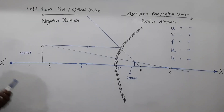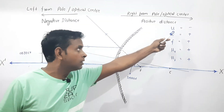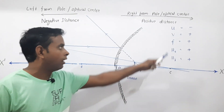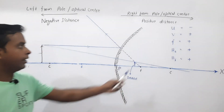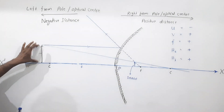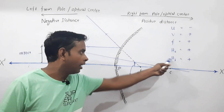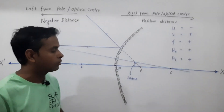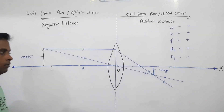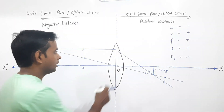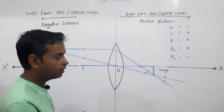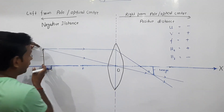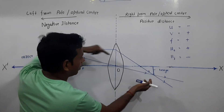In the case of a convex mirror: u is negative, v is positive, f is positive. The height of the object is upward so it is positive, and the height of the image is also upward, so it is also positive. Now if we place a convex lens at the origin, the height of the object is positive.